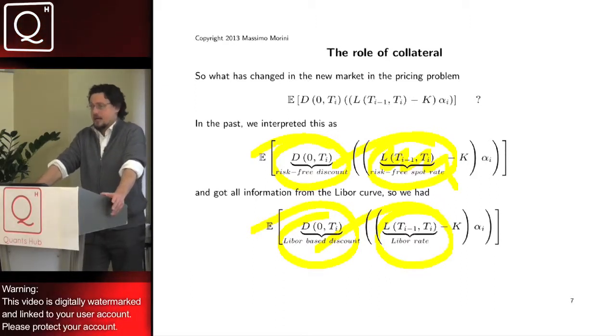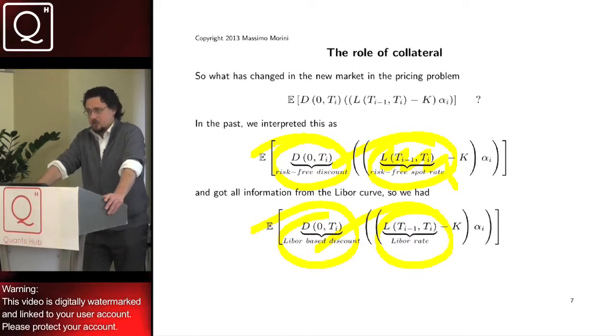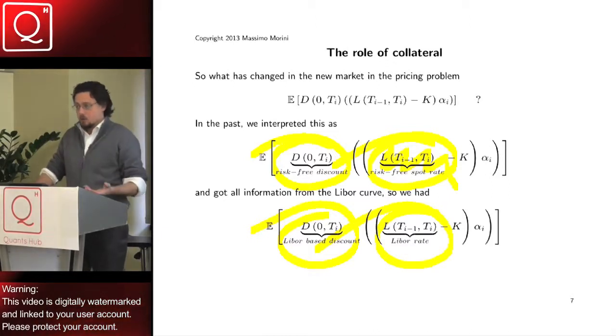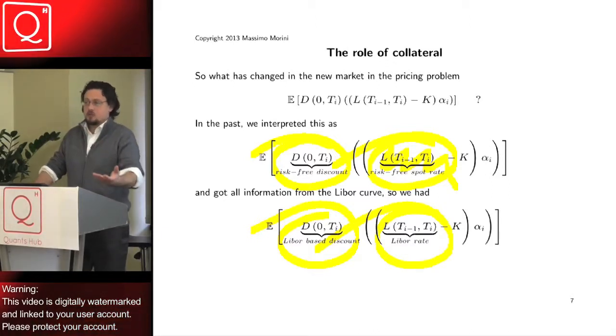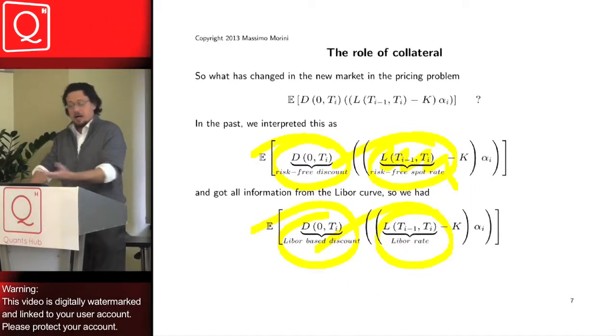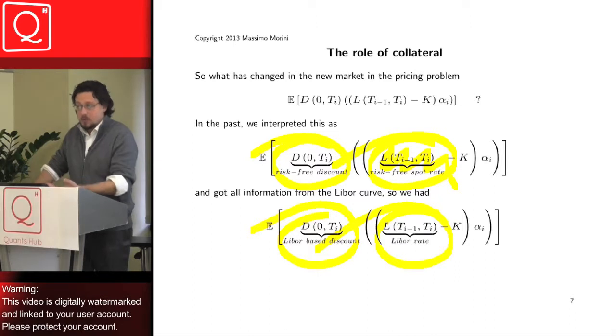Well, this is the point of view of the accountant. For the accountant, what has really changed is that you were computing your discount from a LIBOR curve and now you have to change to an OIS curve. For the underlying, actually, it used to be called LIBOR, it's still called LIBOR.